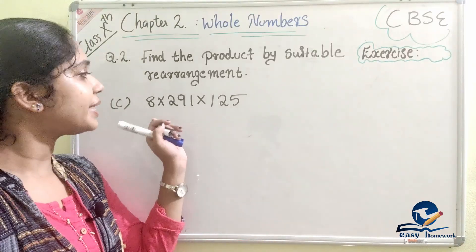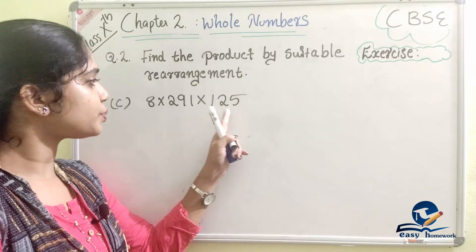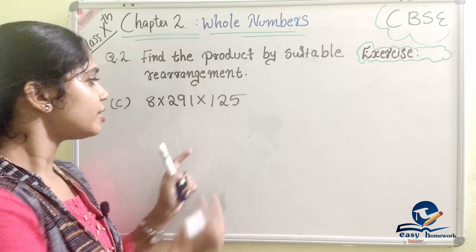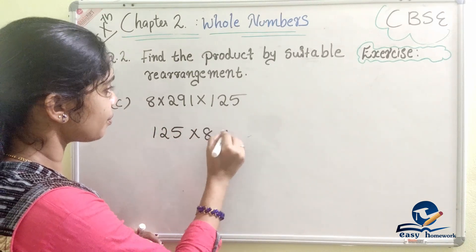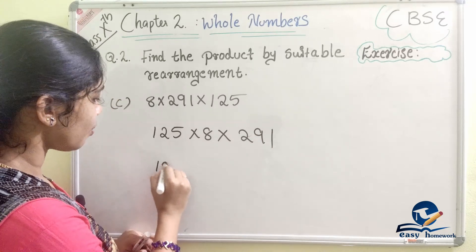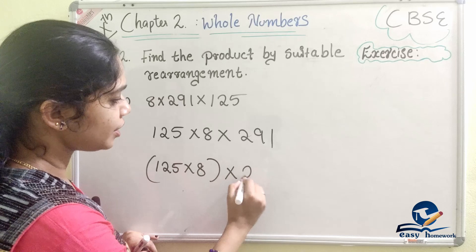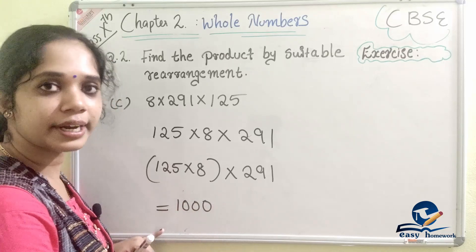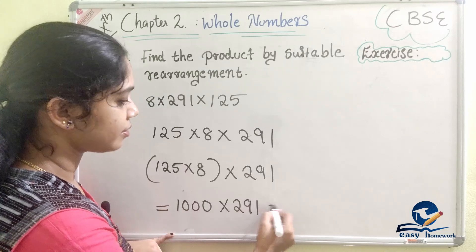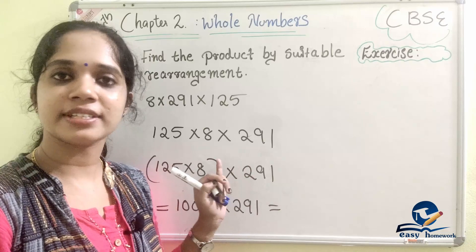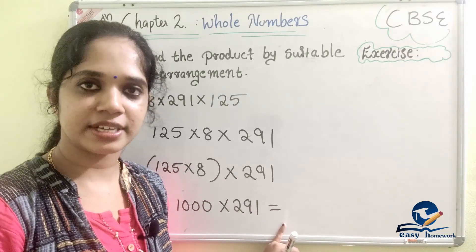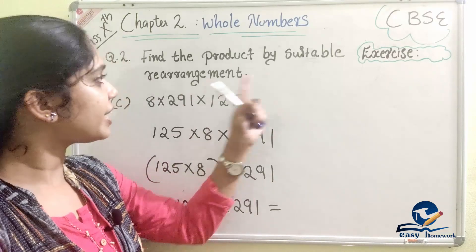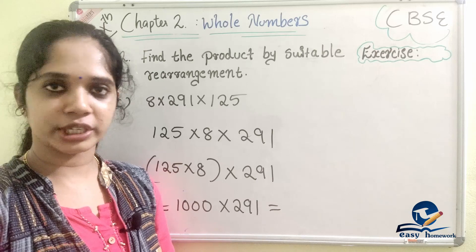We rearrange to 125 × 8 × 291. We check the unit place to get a power of 10. 125 × 8 = 1000, which is 10 to the power of 3. Then 1000 × 291 gives us the answer. We multiply following the pattern in the unit place to complete this arrangement.